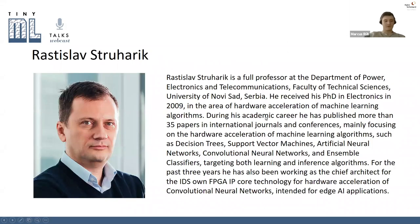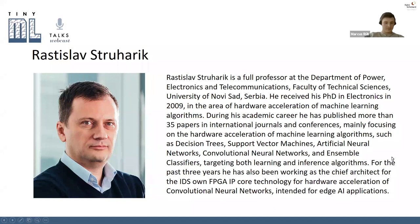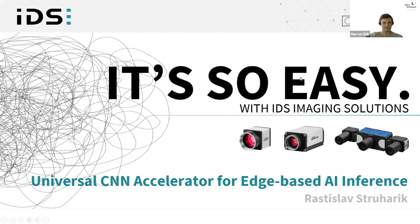Today's talker is Ratislav Struharik, a full professor at the department of power electronics and telecommunications at the University of Novi Sad in Serbia. He received his PhD in electronics in 2009 in the area of hardware acceleration of machine learning algorithms. During his academic career, he has published many papers on decision trees, support vector machines, and convolutional networks. For the last three years he has been chief architect at IDS, developing an FPGA IP core to accelerate convolutional neural networks on hardware.